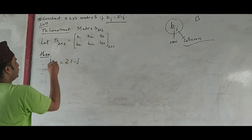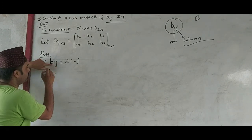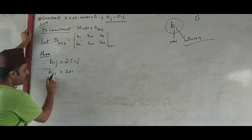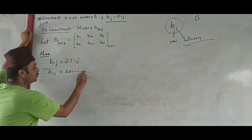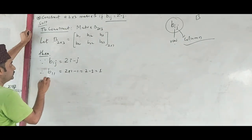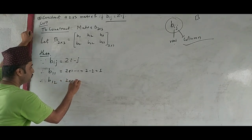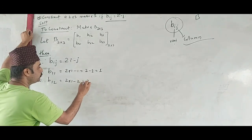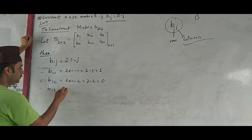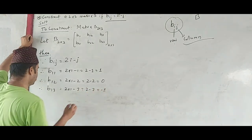So for B11, i is 1 and j is 1: 2 into 1 minus 1 equals 2 minus 1 equals 1. For B12, i is 1 and j is 2: 2 into 1 minus 2 equals 2 minus 2 equals 0. For B13: 2 into 1 minus 3 equals 2 minus 3 equals minus 1.